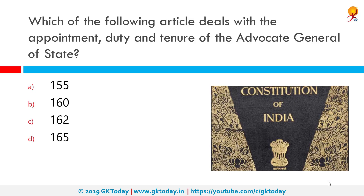Which of the following articles deals with the appointment, duty, and tenure of Advocate General of the State? The correct answer is Article 165. Article 165 states the Advocate General for the State is a person who must be qualified to be appointed as a Judge of the High Court. He holds office during the pleasure of the Governor and his duty is to give advice to the State Government on legal matters.